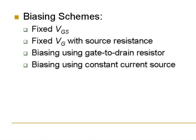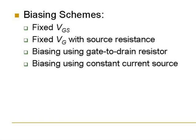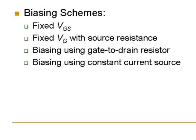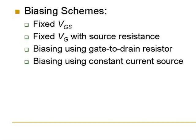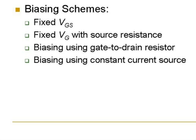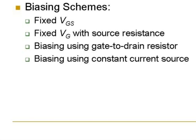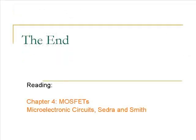The biasing schemes are fixed gate voltage with source resistance or we can bias the MOSFET with a gate to drain resistor or using the constant current source. So we will stop here and solve some problems in the class to understand these biasing schemes a little better.